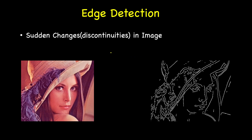Edge detection detects sudden changes or discontinuities in an image. So let's say this is the input image, and here we have the edges extracted from it. You will see that there is a sudden change in intensity going from one region to another, and this edge tries to highlight those discontinuities.